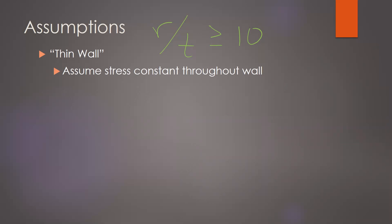Because we've assumed a fairly thin wall, that allows us to assume that the stresses are constant throughout that wall. So if I have a cross section where the z-direction is coming out toward you, the normal stress σz — acting on this cross section — is not going to vary with respect to the radius. Whether I am on the inside, outside, or anywhere in the middle, I'll have the same magnitude of that stress component.